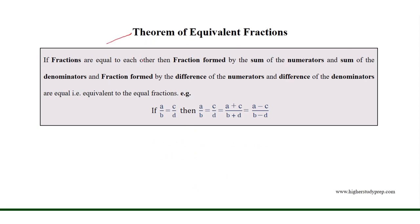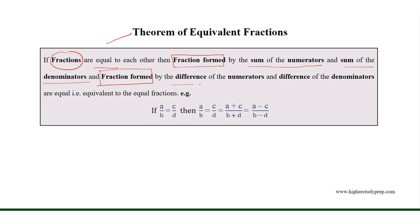Theorem of equivalent fractions. If fractions are equal to each other, then the fraction formed by the sum of the numerators and sum of the denominators, and the fraction formed by the difference of the numerators and difference of the denominators, are equal.